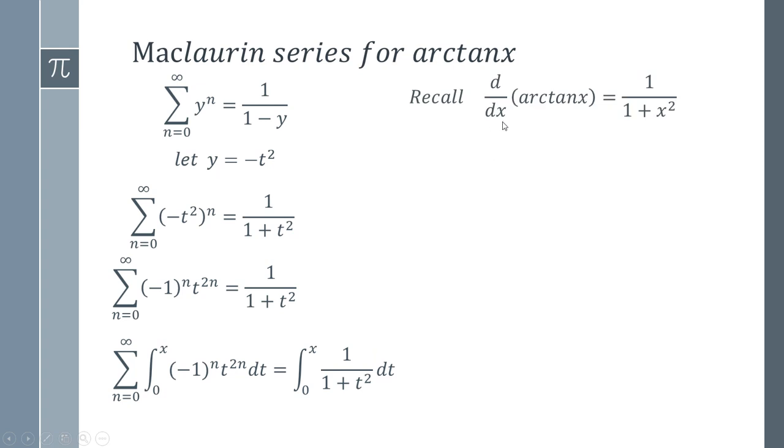You may recall that the derivative of arctan is 1 over 1 plus x squared. So therefore, the integral of 1 over 1 plus t squared from 0 to x is going to be arctan. We're basically integrating the derivative. So we're undoing it and ending up with our arctan back again. And so this means that we could actually replace this whole expression here with arctan. So therefore, arctan is going to end up being this expression.